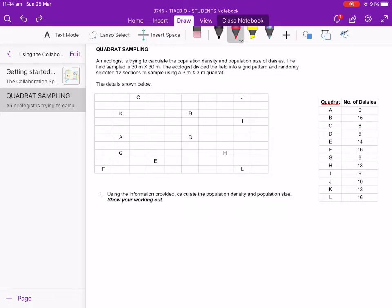The first thing that the ecologist will do is set the field up into a grid pattern and then using Excel they will randomly generate 12 sections to go and visit. So each section gets numbered and then they get Excel to generate a list of numbers and those numbers will be the ones that they will then go and do their quadrant sampling in.